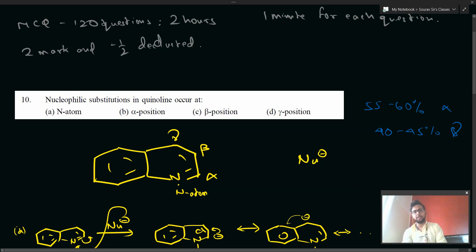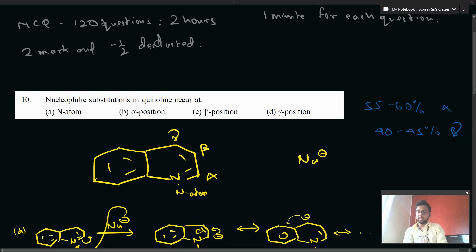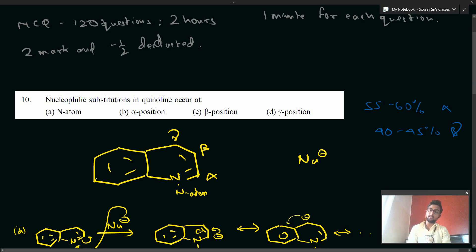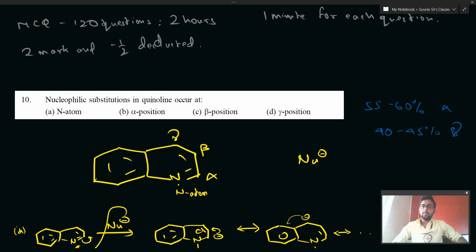So there is about a 5–10% difference between the two reactions, and both are considered major products. This question is not entirely rigorous because, similar to ortho-para directing groups on benzene — where a group activates both ortho and para positions — here both alpha and gamma products form. The only difference is that due to the stability of the resonance intermediate in nucleophilic attack, alpha position is slightly preferred over gamma, differing by just 5–10%. The correct answer is option B, the alpha position.